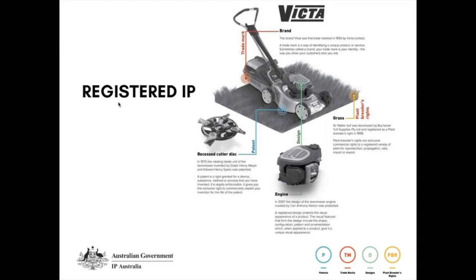There's also a registered design on the Victor lawnmower — specifically for the shape of that engine block. When we look at designs, we're looking at the aesthetic appearance of a product. Most lawnmowers have a blocky construction with sharp angles, but Victor invested time and effort to create a uniquely smooth-shaped lawnmower, and because it has that unique appearance they were able to get a registered design for it. Finally, there's also plant breeders rights covering the grass — Walter Turf — shown in the picture, because it's a unique plant species.